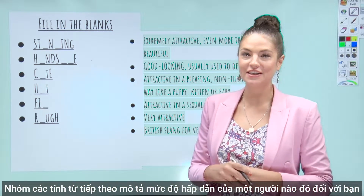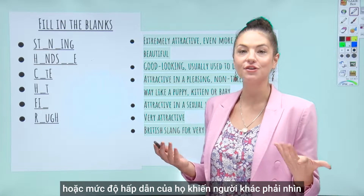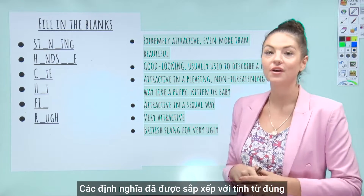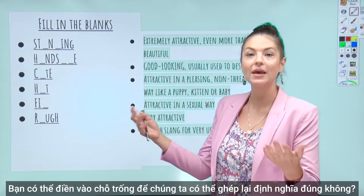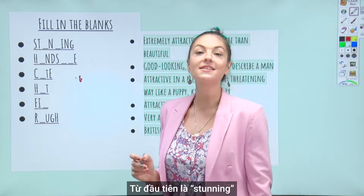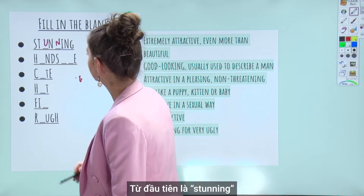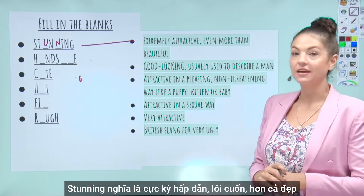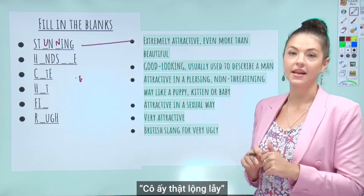Our next set of adjectives describe how attractive someone may be to you or how appealing they are to look at. The definitions are already lined up with the correct adjective but there are some letters missing. Can you fill in the blanks to match the correct definition? The first word is STUNNING — this means extremely attractive, even more than beautiful. She is stunning.